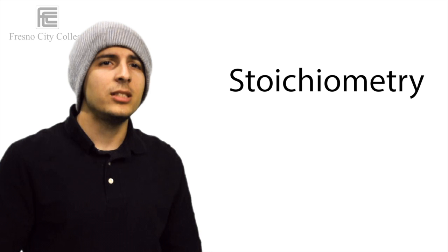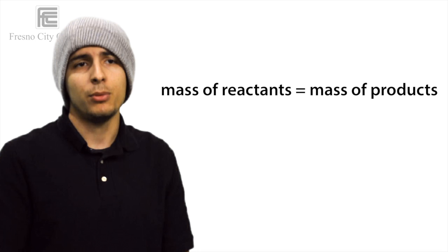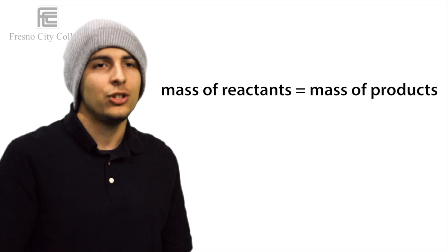Stoichiometry deals with the relative quantities between reactants and products in chemical reactions. It was founded on the law of conservation of mass, which states that the mass of the reactants must be equal to the mass of the products. In a balanced chemical reaction, the reactants and products typically form a ratio of positive integers.